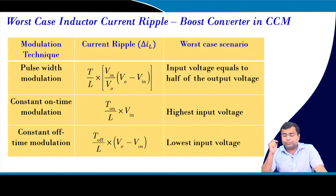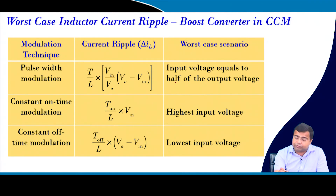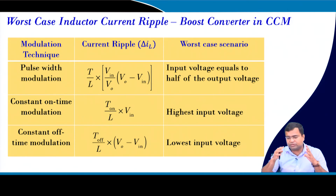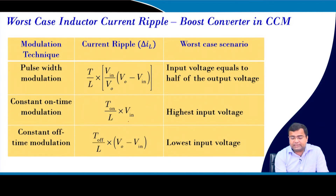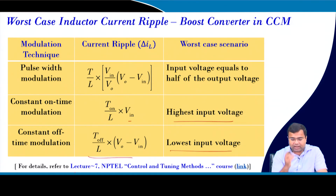The worst-case current ripple for the boost converter under CCM with PWM occurs when the duty cycle is 50%, i.e., when the output voltage is twice the input voltage. Under constant on-time it is maximum at the highest input voltage, and under constant off-time it is maximum at the lowest input voltage — as discussed in lectures 7 and 23.